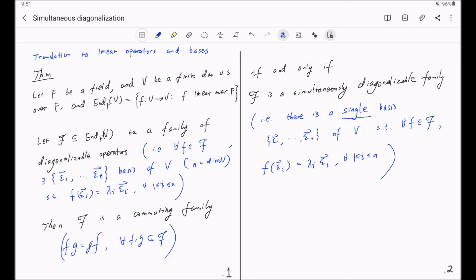And you can also translate this back to the setting of matrices and conjugations. Because a linear operator and a basis has a matrix form. And this diagonalization can be expressed in terms of the conjugation of matrix, giving you a diagonal matrix.